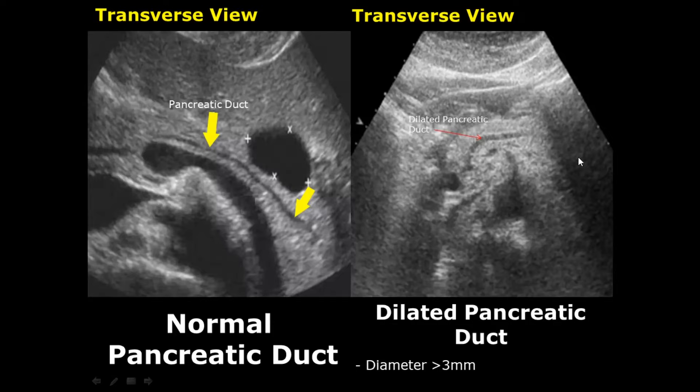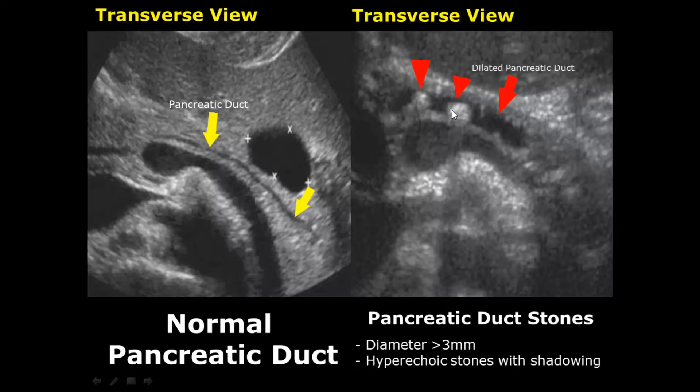The pancreatic duct may also have stones. They will appear as hyperechoic foci and will give posterior shadowing, along with a dilated pancreatic duct.